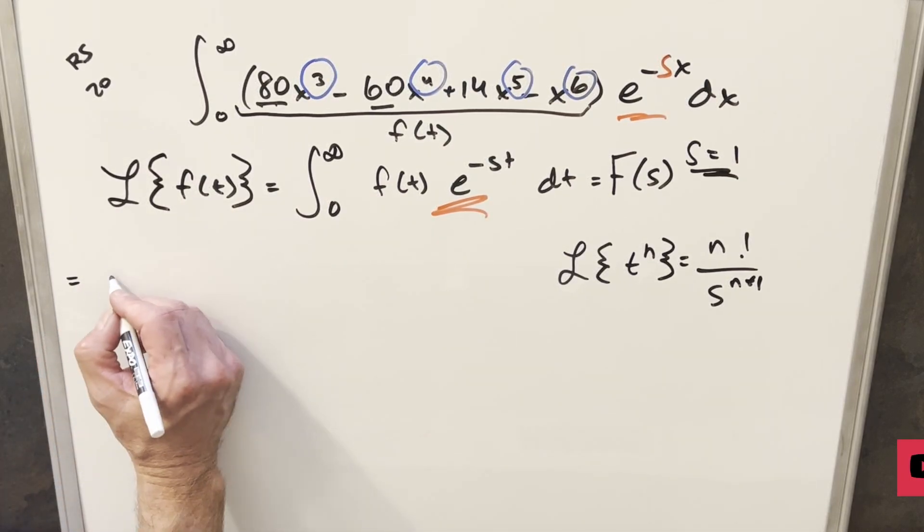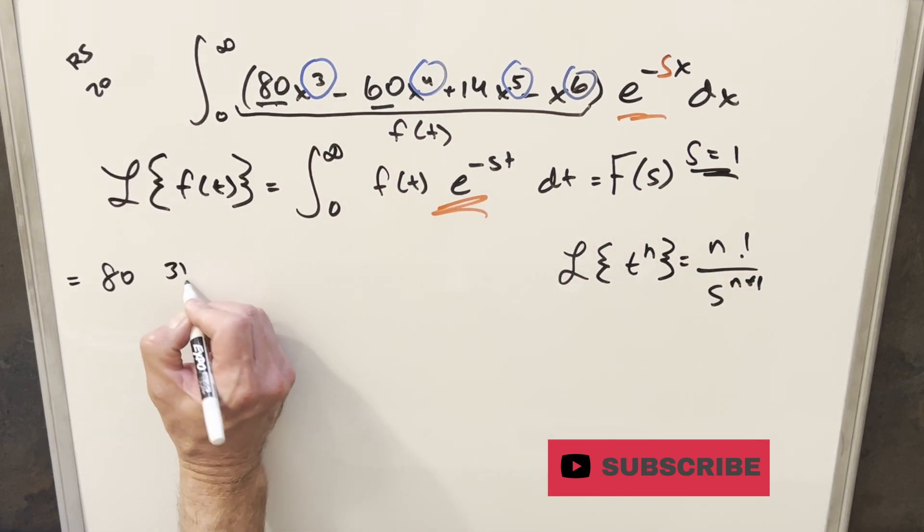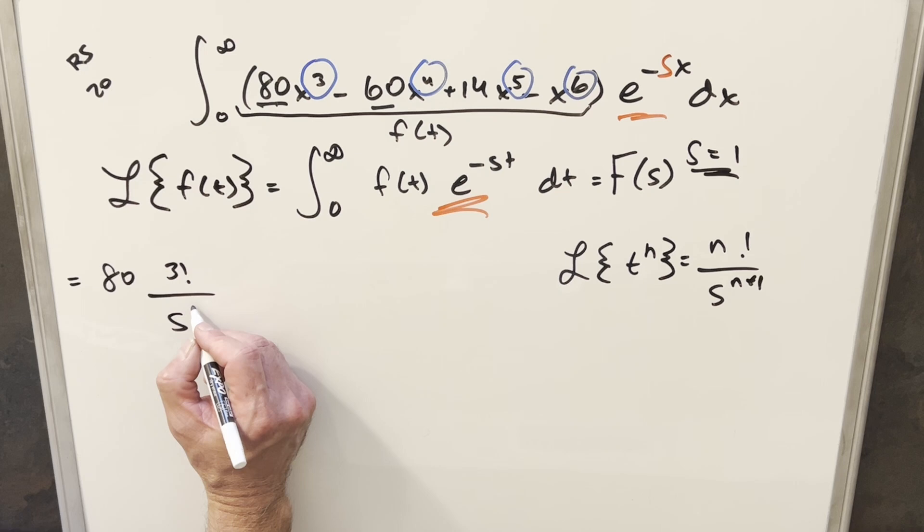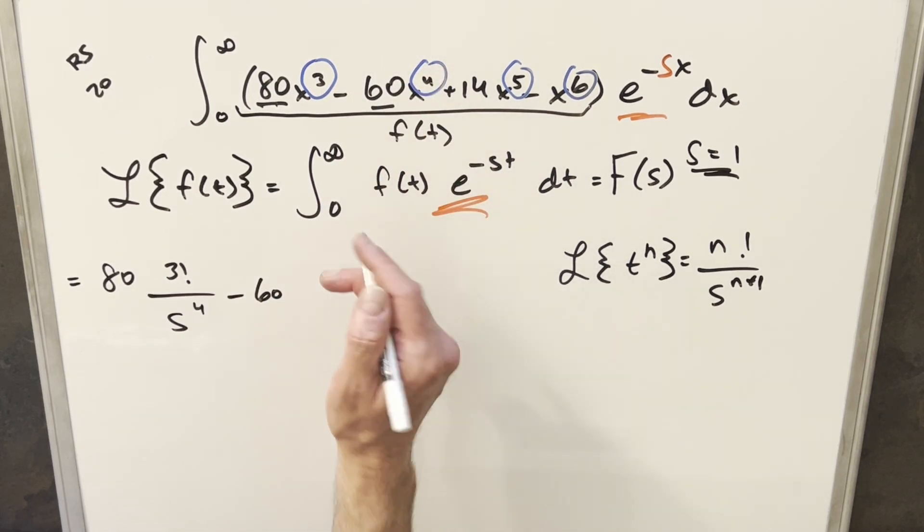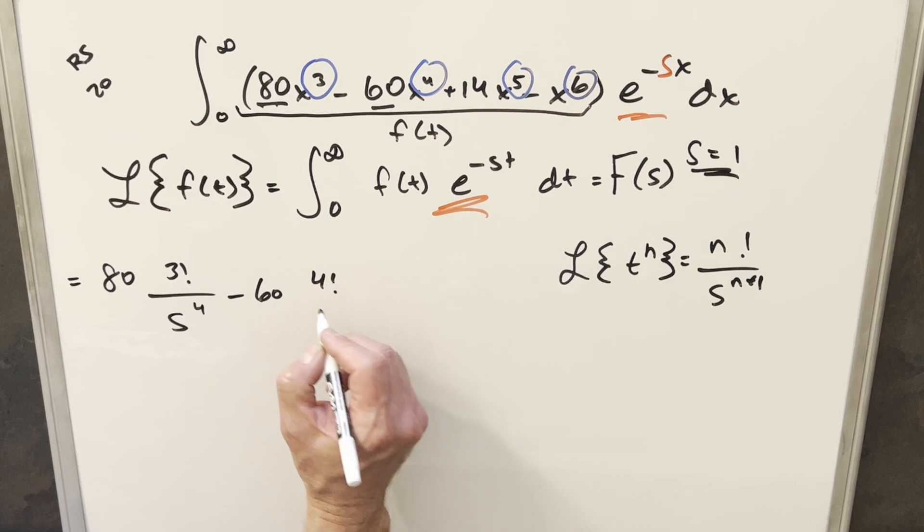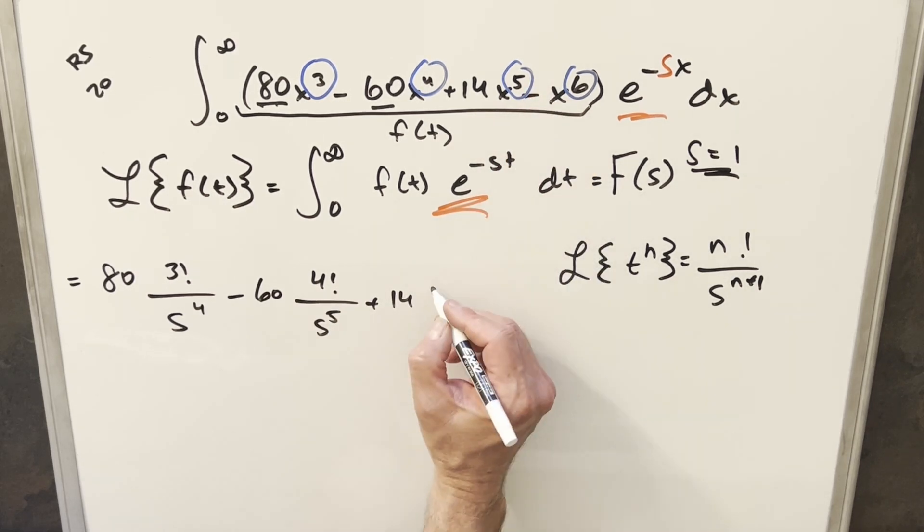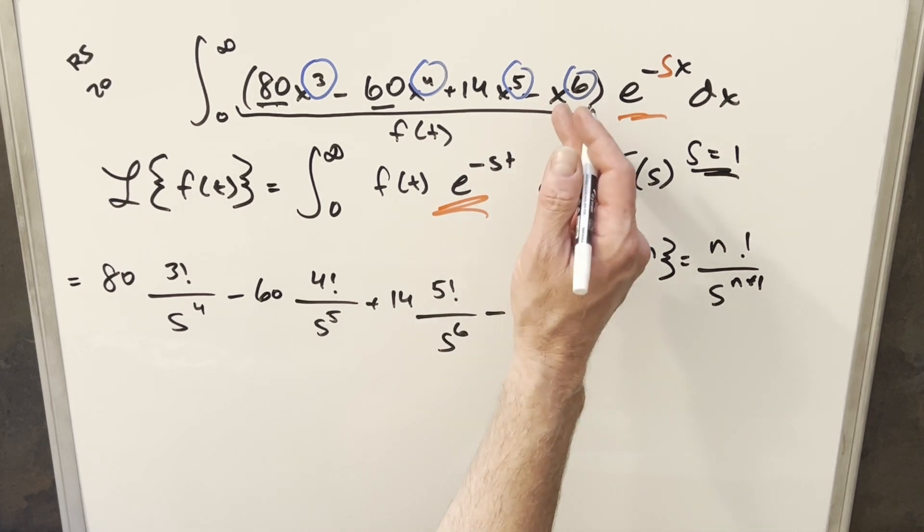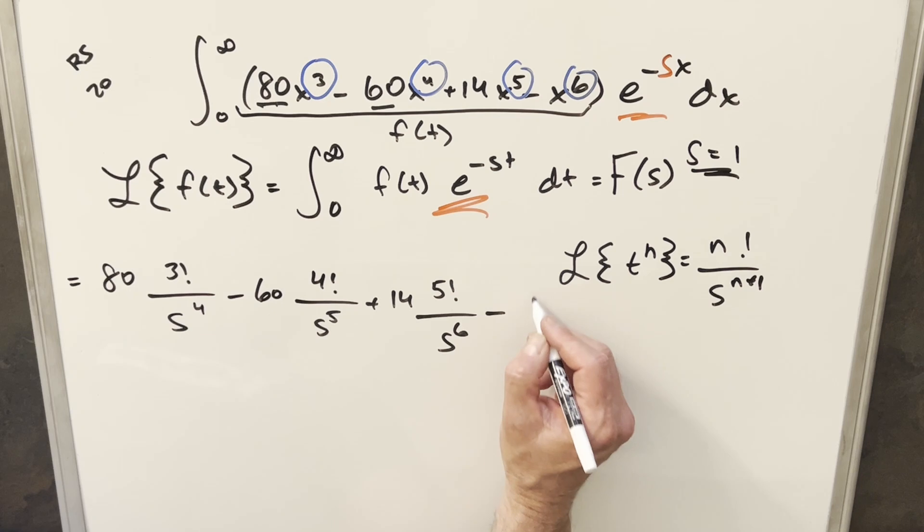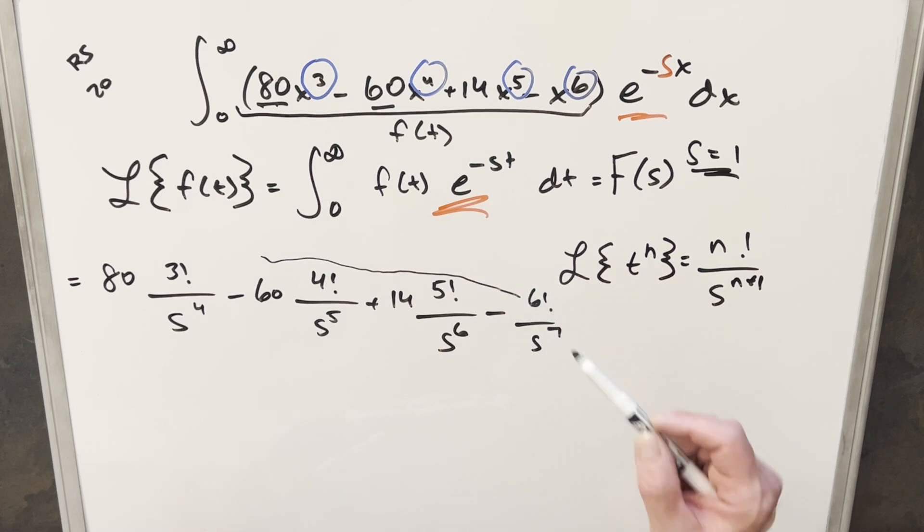So going to our result for this, we're going to have 80, then our n value here is 3, so that's going to be 3! over s^4. And then for the next one, we have minus 60, so that's going to be 4! over s^5. And then we're going to have plus 14, so that's going to be 5! over s^6. Then the last one, we just have minus 1, that's going to be 6! over s^7.